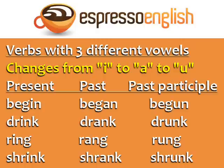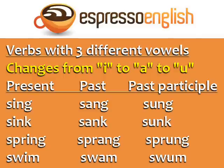Verbs with three different vowels. In this group, the vowel changes from I to A to U: begin, began, begun; drink, drank, drunk; ring, rang, rung; shrink, shrank, shrunk; sing, sang, sung; sink, sank, sunk; spring, sprang, sprung; swim, swam, swum.